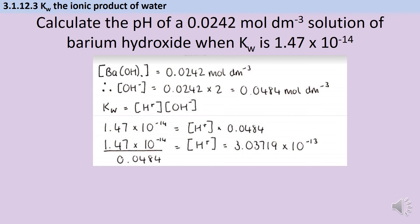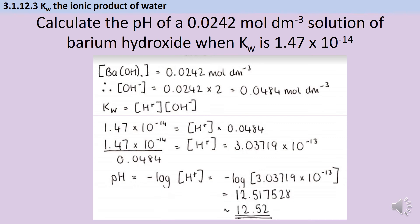From here we can use our normal method for calculating pH, negative log of the concentration of hydrogen ions. This gives us an answer of 12.517528, but as we know, pH must always be reported to two decimal places, so we give our final answer as 12.52.